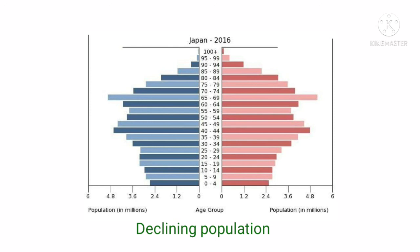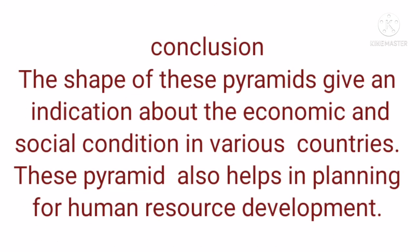These are the three types of pyramid: expanding, constant, and declining population. In conclusion, the shape of the pyramid gives an indication about the economic and social condition of various countries. This pyramid also helps in planning of human resource development. That's all for today, thank you.